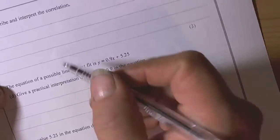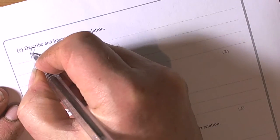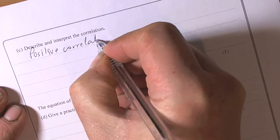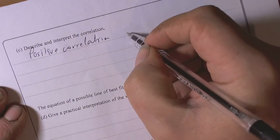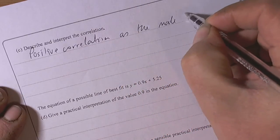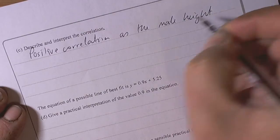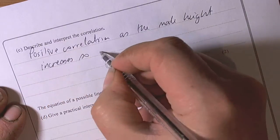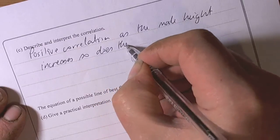When it says describe and interpret the correlation, it's a positive correlation, and basically we're going to say as the male height increases, so does the female height.